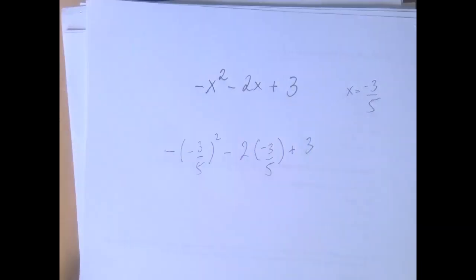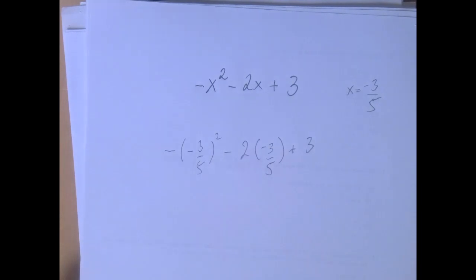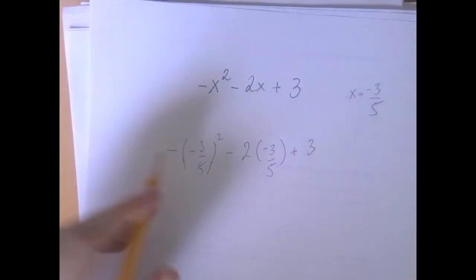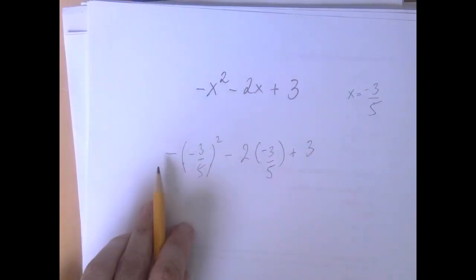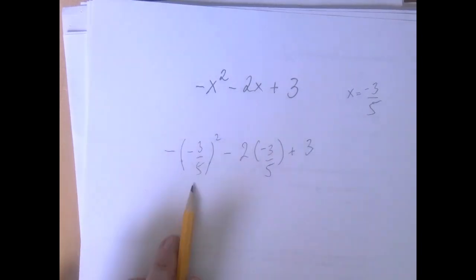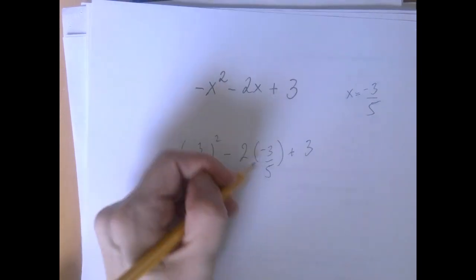Now the problem is reduced to an order of operations problem. This minus here can be interpreted as a multiplication, so the exponentiation is the strongest one. We have multiplication by negative 1, exponentiation, subtraction, multiplication, and then addition.